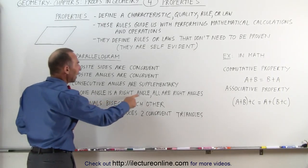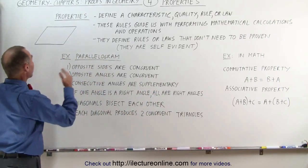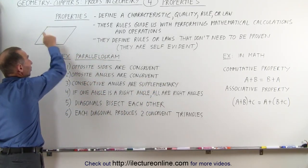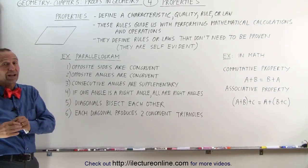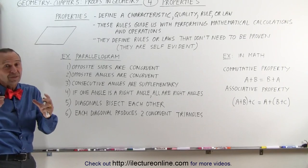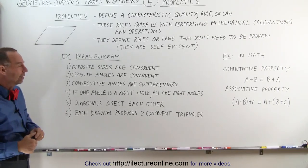If one angle is a right angle, all are right angles. So if we have a parallelogram, but one of the four angles is a right angle, that means all four of them are right angles. And then we no longer have a parallelogram. Then we have specifically a rectangle, which is a special type of parallelogram.